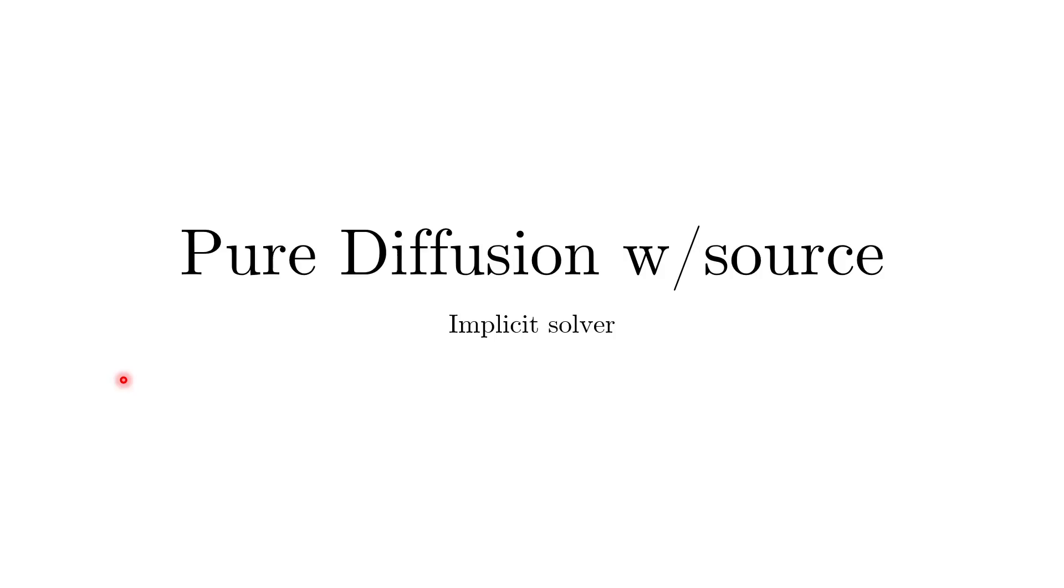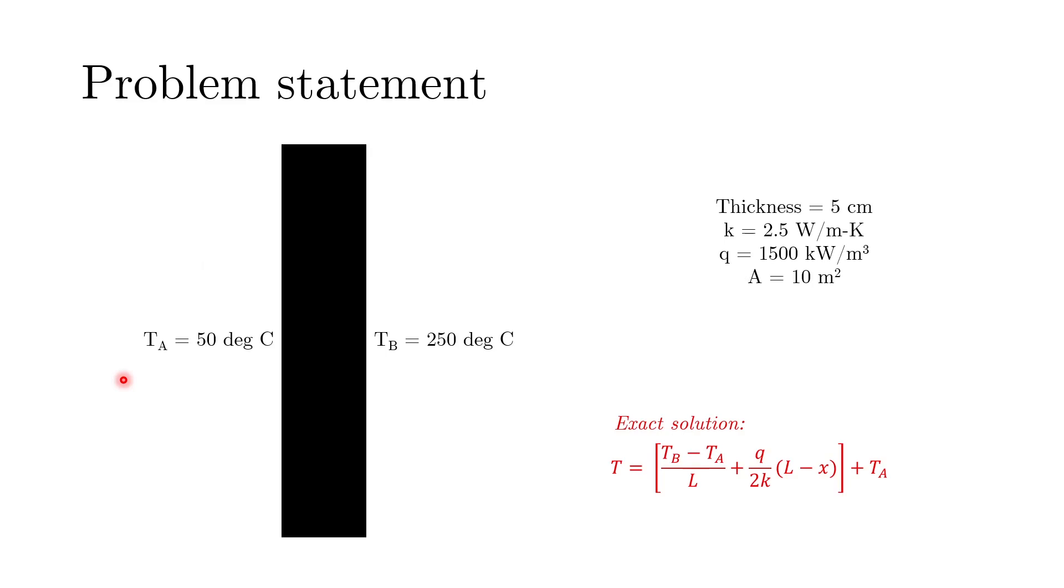The problem that we are going to look at today is a wall heat transfer where this is some interior of some building with a temperature of 50 degrees Celsius and this is an exterior with a temperature of 250 degrees centigrade. This wall is primarily transporting heat in the normal direction to the wall and this wall has a very large cross-sectional area.